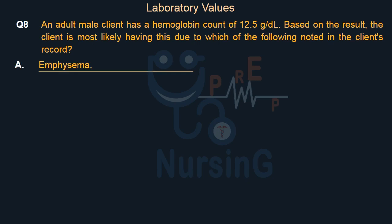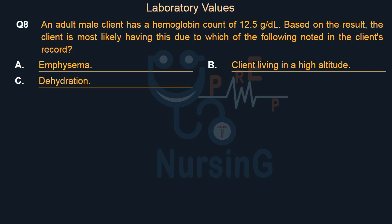Option A: Emphysema. Option B: Client living in a high altitude. Option C: Dehydration. Option D: History of enlarged spleen.